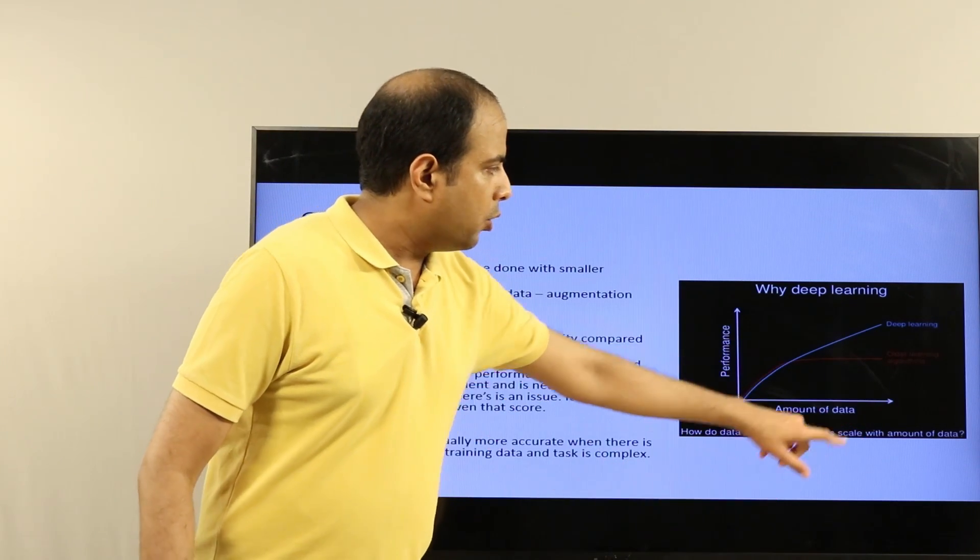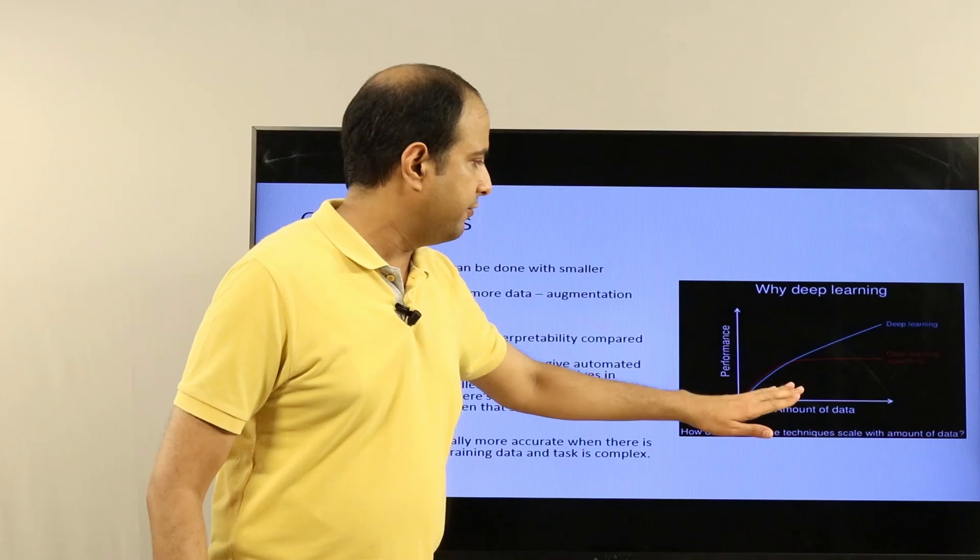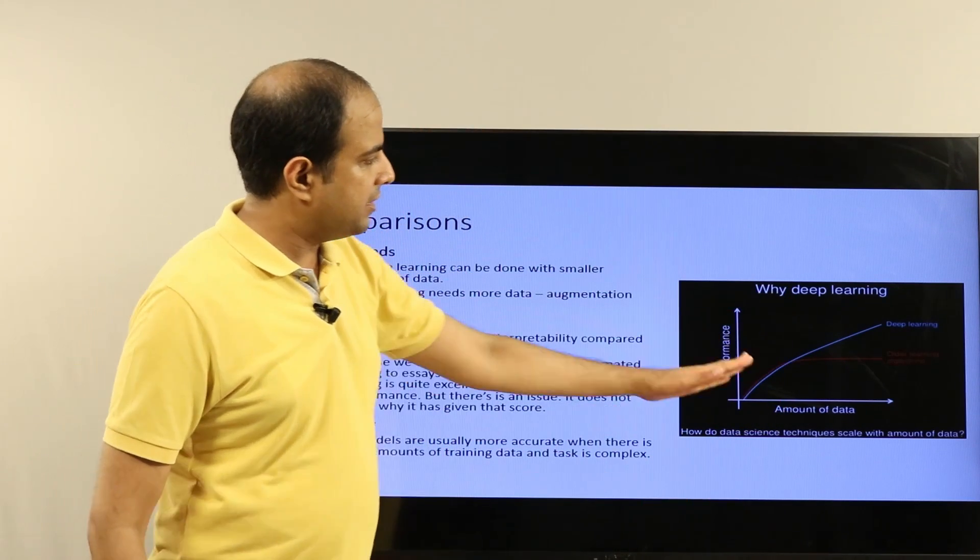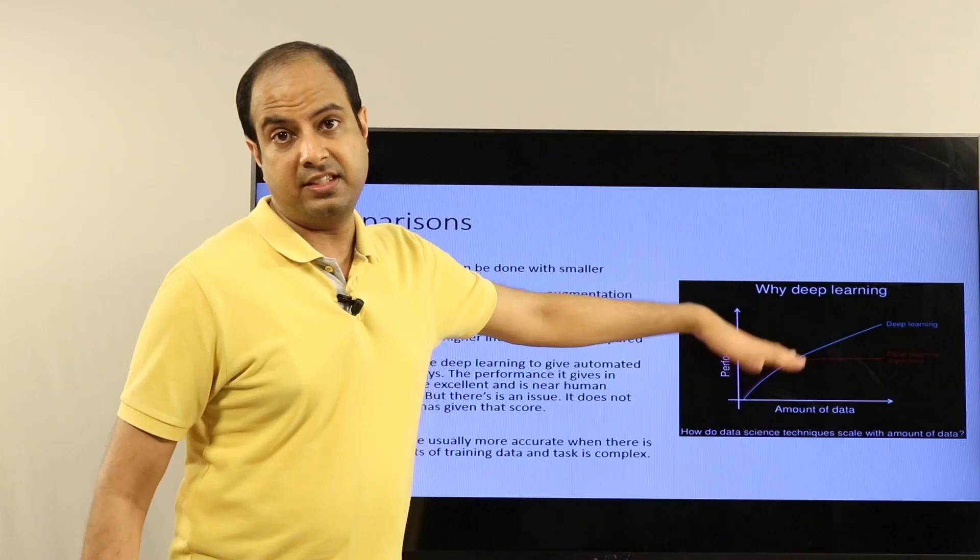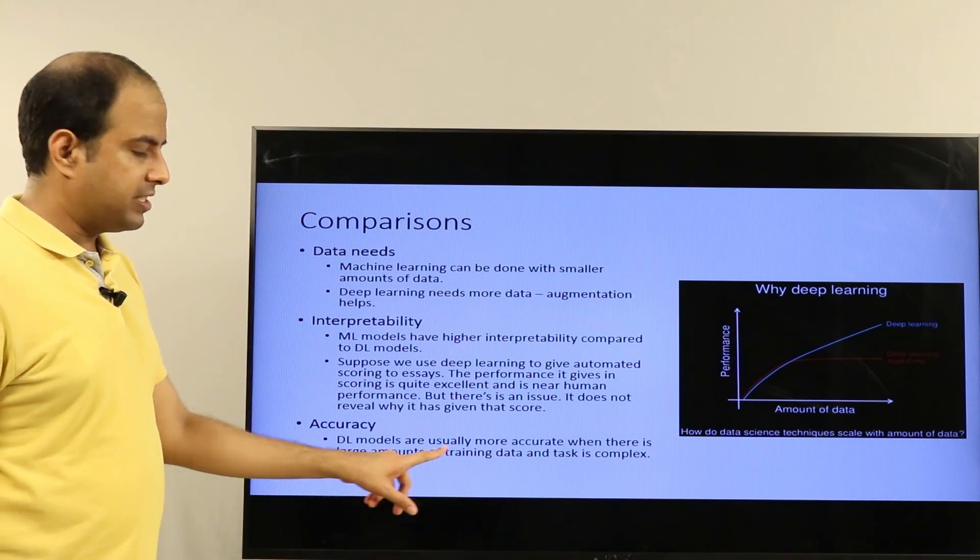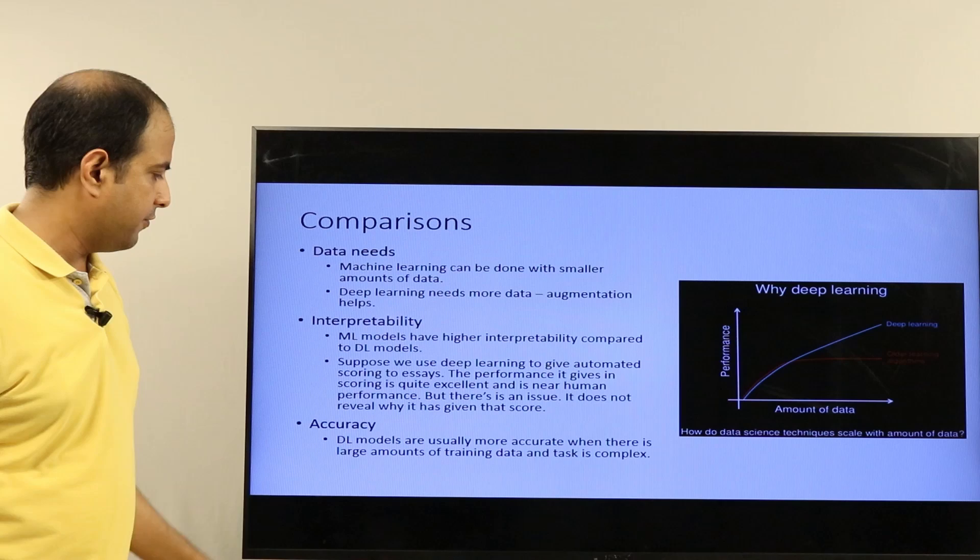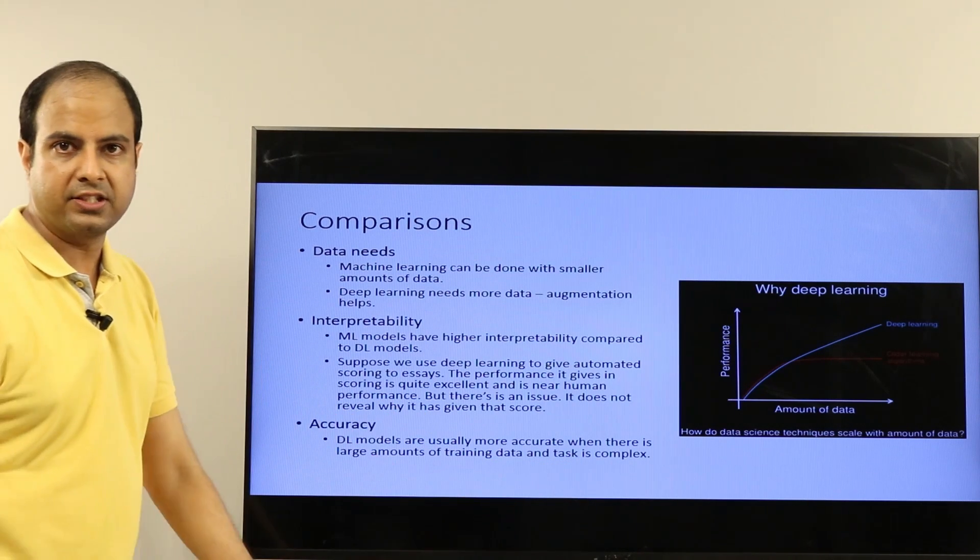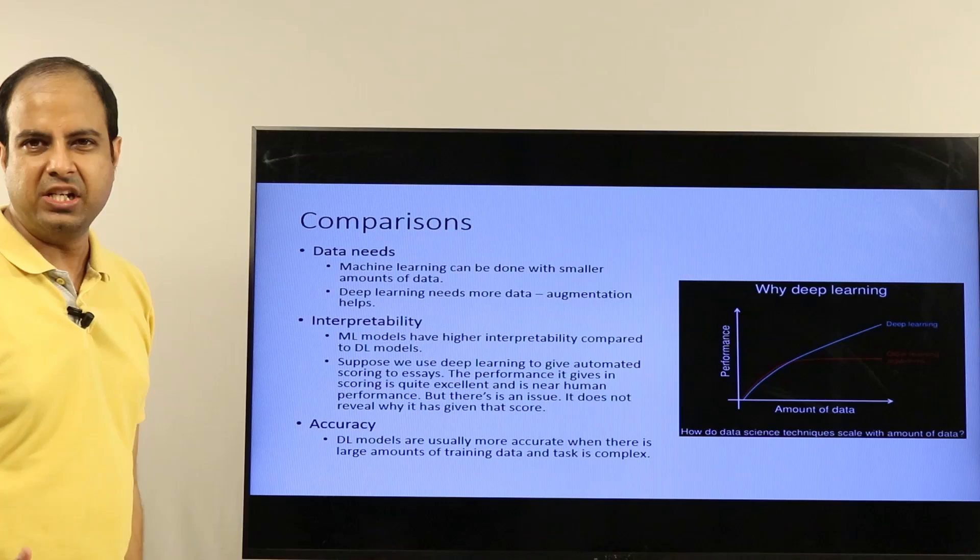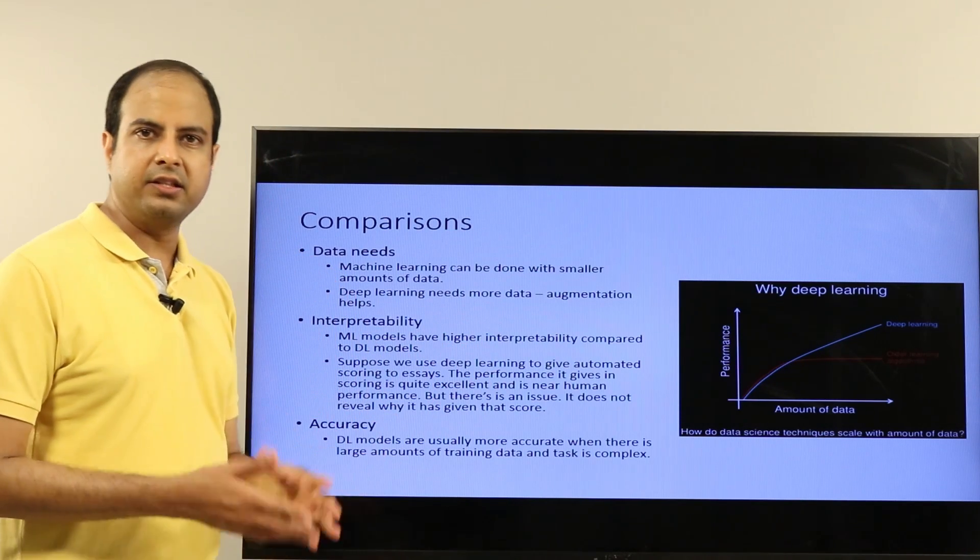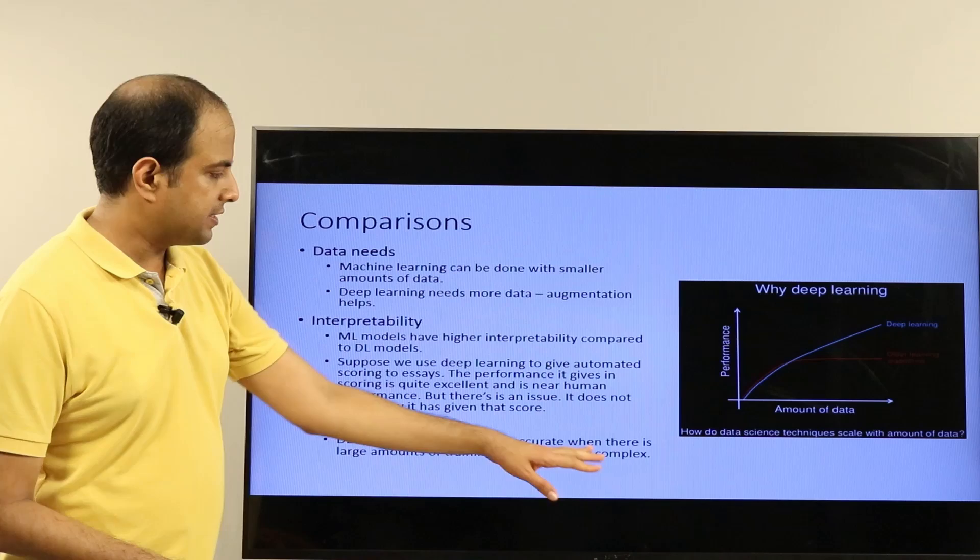Accuracy-wise, DL models are usually more accurate when there is large amounts of data and the task is complex. If the task is simple, machine learning models and deep learning models have similar accuracies on the given amount of data, but for complex tasks with larger data, deep learning gives you better results.